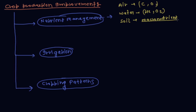Macronutrients from soil include nitrogen, phosphorus, potassium, calcium, magnesium, and sulfur.